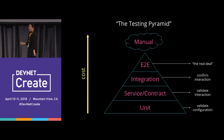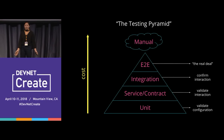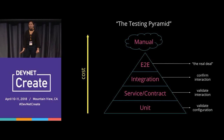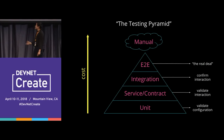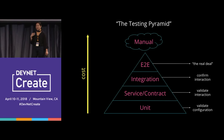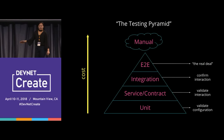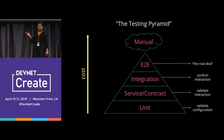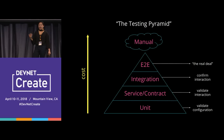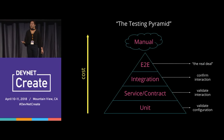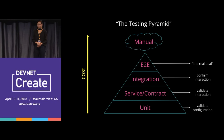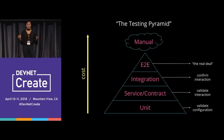The testing pyramid — starting at the bottom, you've got unit tests. Those are really simple, isolated tests that validate your configuration and whether things are functioning as you expect. Service contract tests are next — they evaluate your interactions, inputs and outputs. Integration tests confirm the interaction. And end-to-end tests are the real deal.